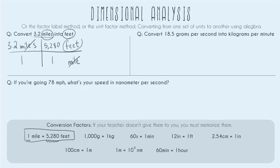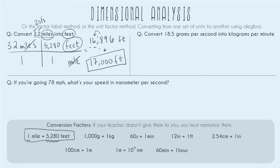Now the only thing left to do is the math. Both 3.2 and 5,280 are on the top, which means they get multiplied together. The denominator is only 1, so we can ignore it, and we get 16,896 feet. For sig figs — only worry about this if your teacher requires significant figures — 3.2 has two sig figs, so we round up to 17,000. Our final answer is 17,000 feet with no decimal point, otherwise that would add more sig figs.